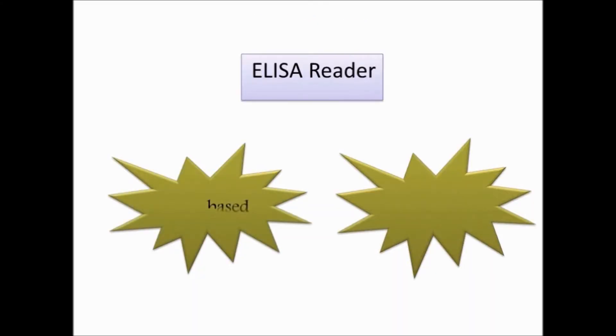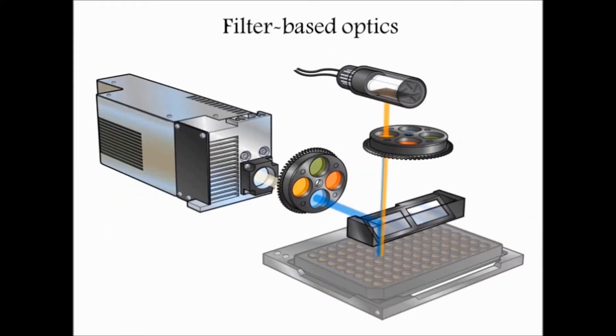The two types of optics used in the ELISA reader are filter-based and monochromator-based. Filter-based optics: